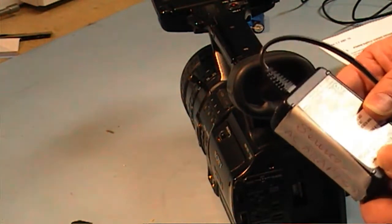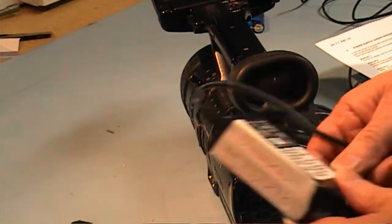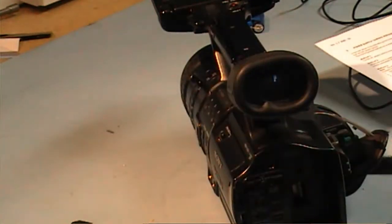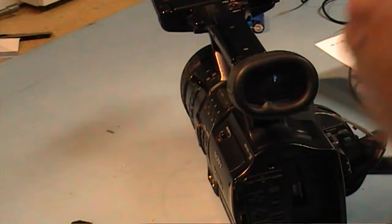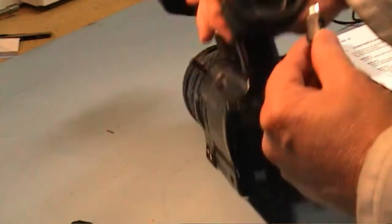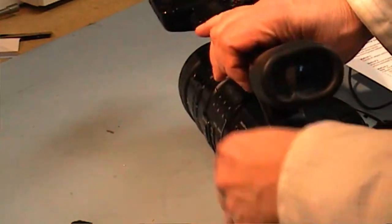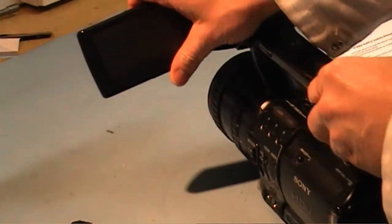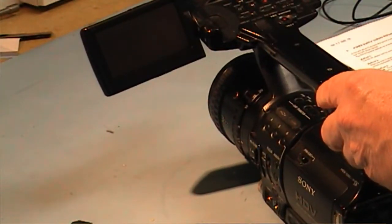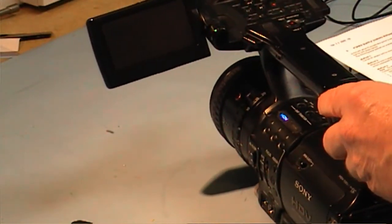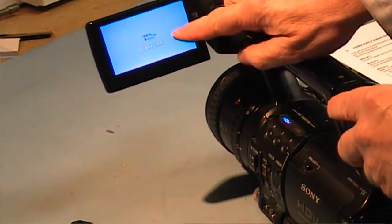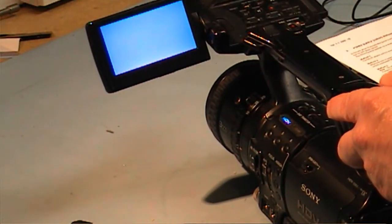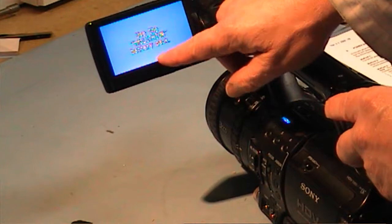This one here is the AC-100C. The problem, as we'll see, it'll power it up. We'll just go to camera mode. Sony comes up, camera, and then it shuts down.